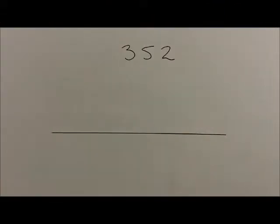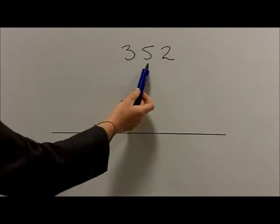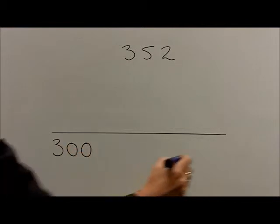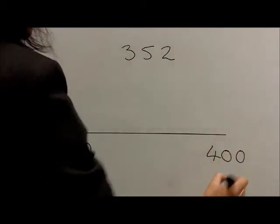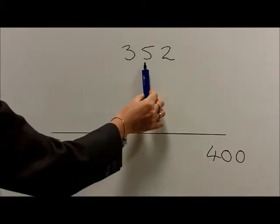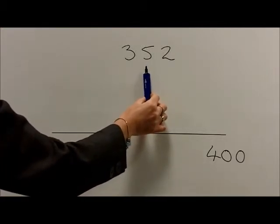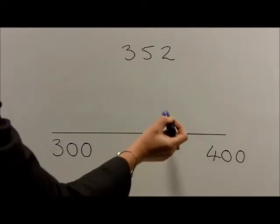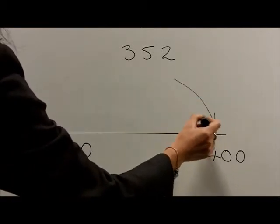With the number 352, the two multiples of 100 that this number lies in between are 300 and 400. We then follow the rounding rules looking at the digit in the tens. As this digit is a 5, this number means that we round up, so 352 will round up to 400.